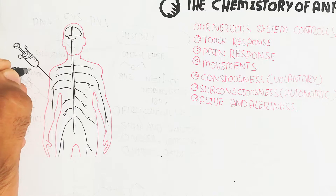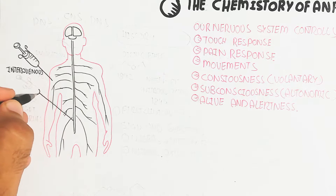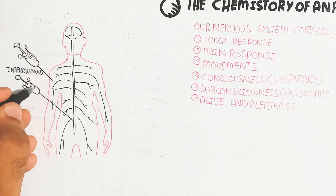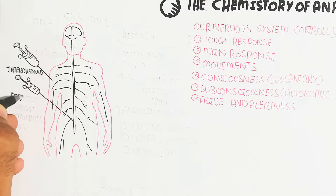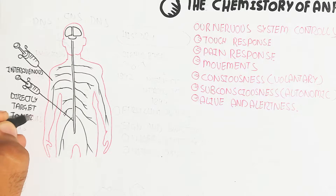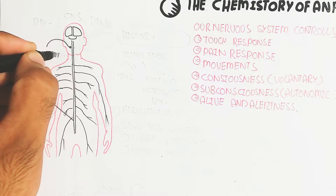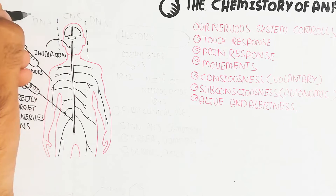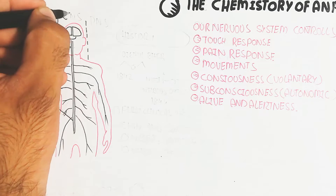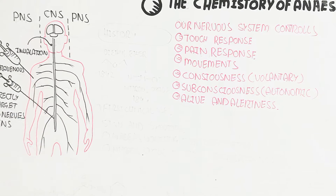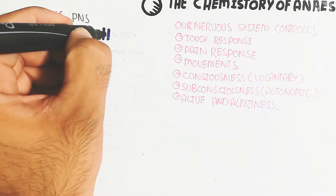The anesthetic target can be intravenous or inhalation, directly targeting the nerves and the central nervous system. So let's begin to understand first the history of the anesthetic and how we can categorize the historical data.